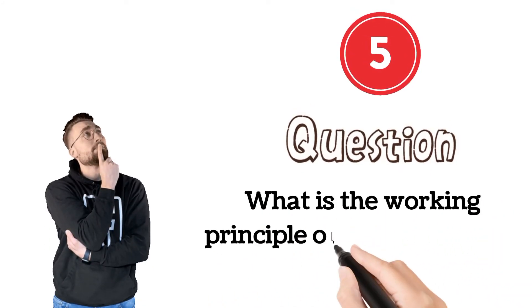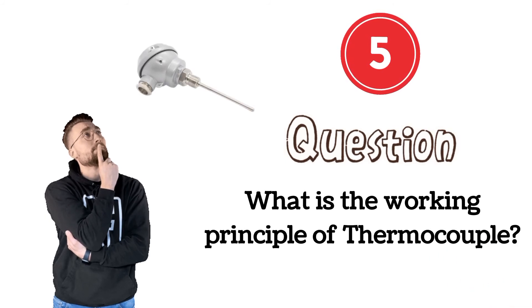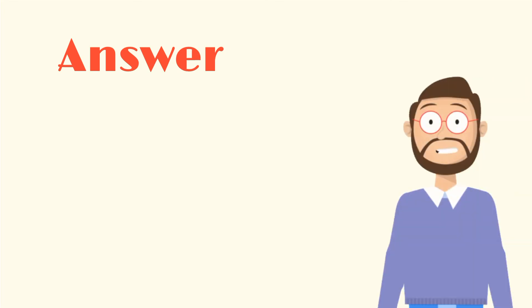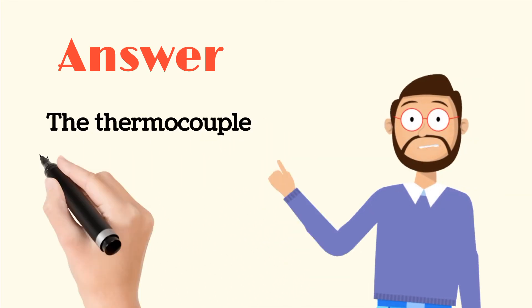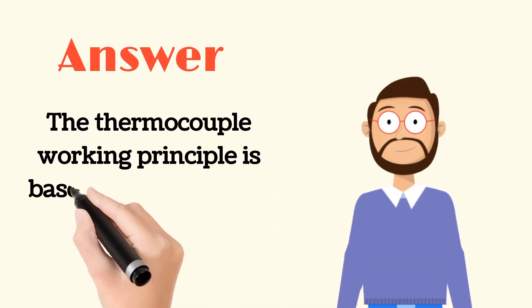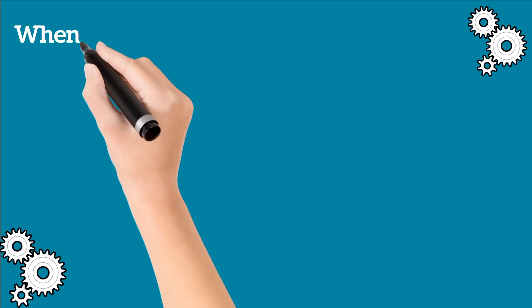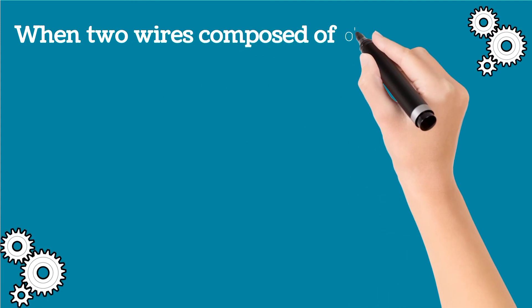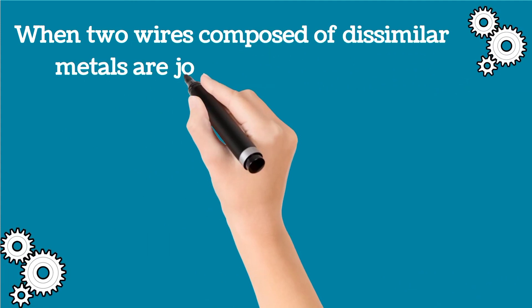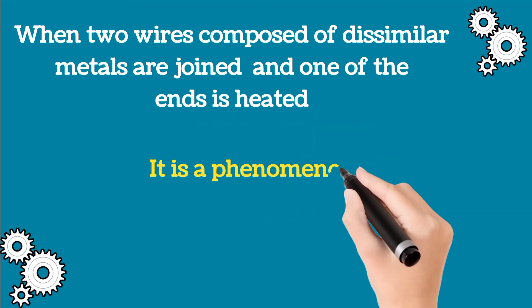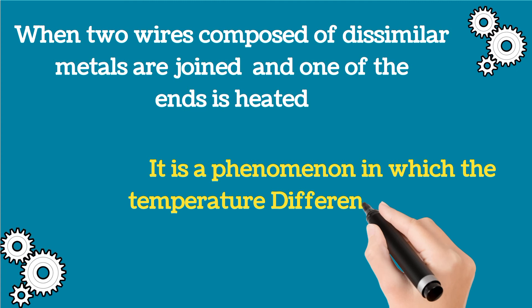The fifth question is: what is the working principle of a thermocouple? The answer is that a thermocouple works on the Seebeck effect. When two wires of different materials are joined together and heated at one end, a voltage or EMF is produced due to the temperature difference.